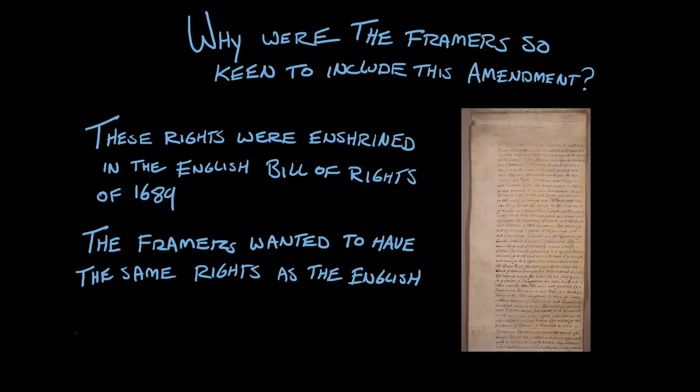One of the reasons that the founders wanted this was that, like the English who had had problems with the monarch imposing excessive bail, excessive fines, and inflicting cruel and unusual punishments, the founders also knew that there was a risk of abuse from the government in the United States. And so they also wanted those rights because originally in the Constitution, these rights were not protected. The Bill of Rights was ratified in 1791, which ensured that there would be protections against cruel and unusual punishments, excessive bail, and excessive fines.